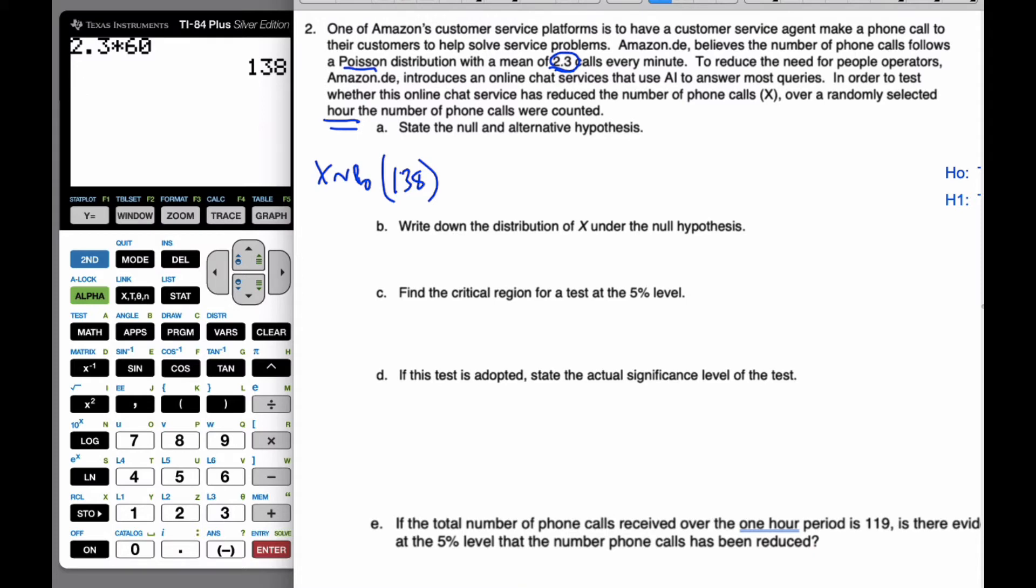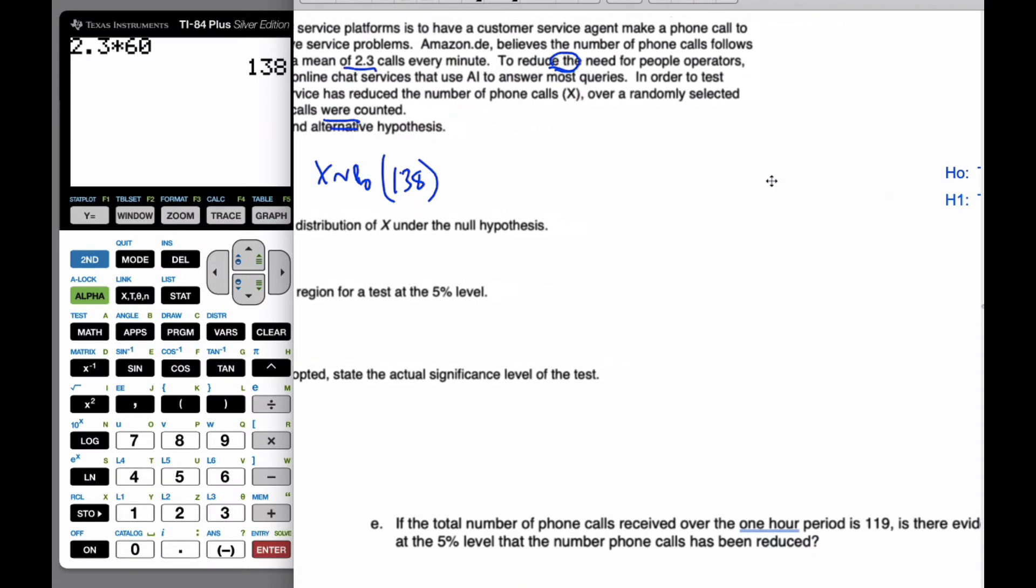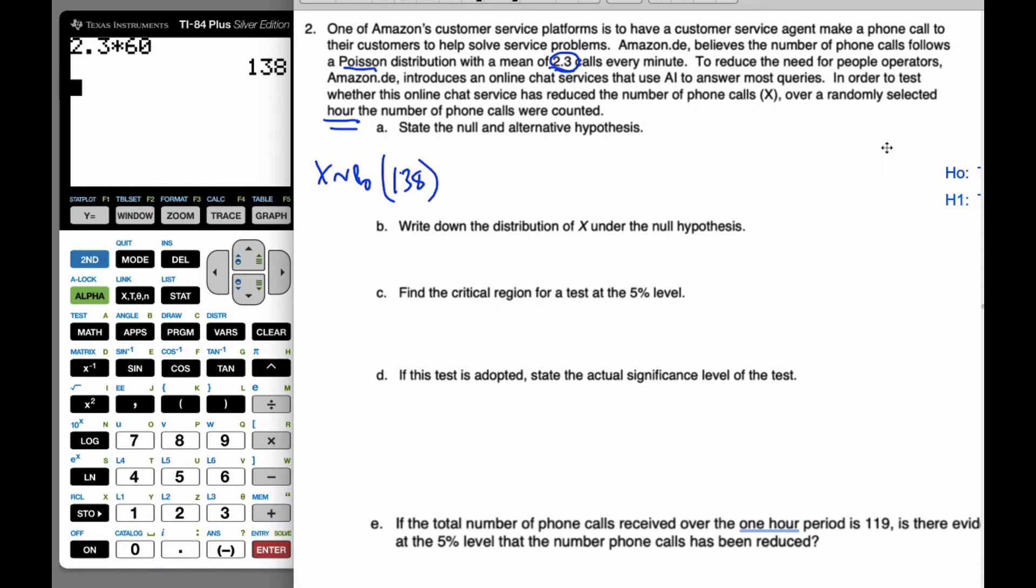The alternative null hypothesis, it's going to be there is no reduction in the phone calls, meaning we have 138 calls per hour. And the alternative is there is a reduction in phone calls, meaning there's less than 138 calls per hour. Here's our distribution.